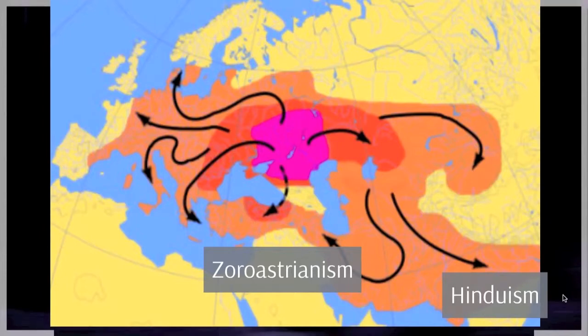We want to start the same place we started with Zoroastrianism: with the ancient Aryan migration. We talked about how Zoroastrians moved into what is now Persia. Well, ancient Aryans also moved into northern India — in fact, it's the more famous part. So Zoroastrianism and Hinduism share the ancient Aryan religion.